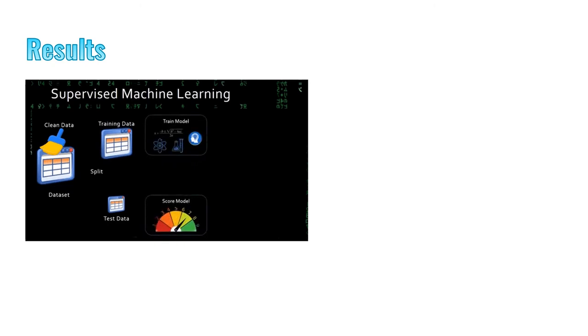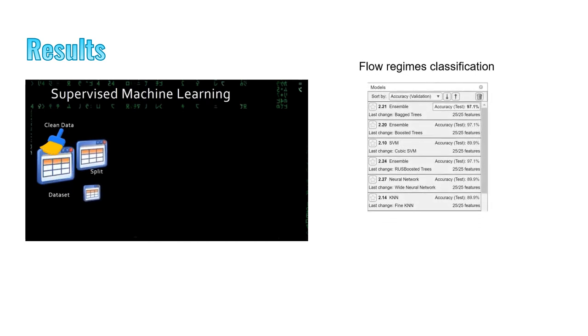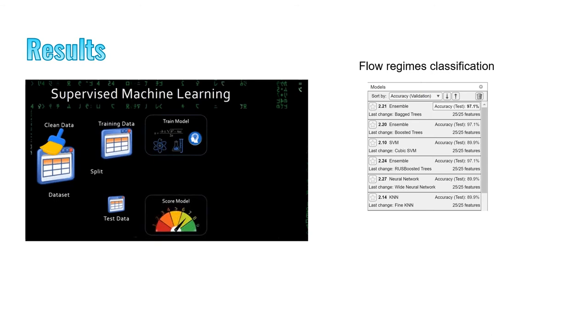The total data set is divided into 80% for training and the remaining 20% for testing the final accuracy of the model. For flow regimes classification, various classification models present in the classification learner application were implemented, and only important features were selected to train the model.